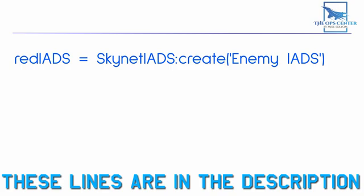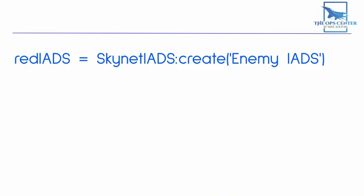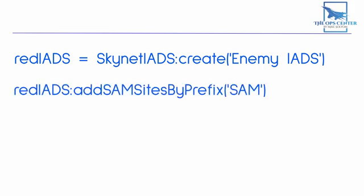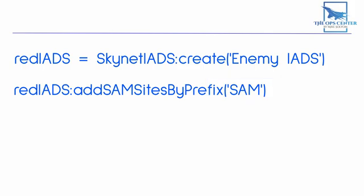First, we're going to create the IADS itself with the following line. Unlike the SAM battery and the EW radar, the IADS does not have a physical unit in DCS — it's just an abstract grouping that ties everything together. In this line of code, we're calling our IADS "red iAds". Now we're going to add physical units to our abstract grouping. We'll start by adding our SAM sites using this line of code. What this is doing is going into the mission and looking for any groups that have the prefix SAM in their name. If it finds one, then it gets added as a SAM site to red iAds. This is why we named our sites in a way where they all began with SAM.